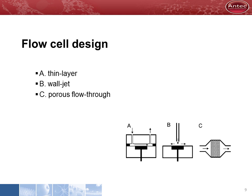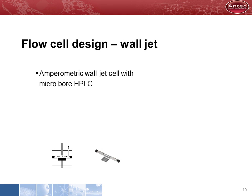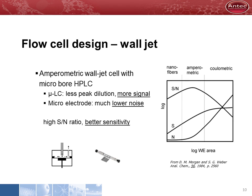Our cells are amperometric cells in contrast to the porous flow-through cells which are called coulometric. Amperometric cells have a huge advantage in that they can be combined with micro-LC without losing performance. Micro-bore LC has less peak dilution and thus more signal. Our amperometric cells have a small electrode area and thus less noise. This results in a better signal to noise ratio, as confirmed by literature publications.